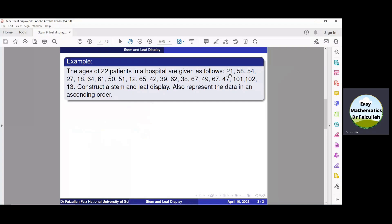According to this method, we divide each number into two parts. The first part is called stem and the remaining is called a leaf. Just like in 21, 2 is stem, 1 is leaf. In 58, 5 is stem, 8 is leaf. In 54, 5 is stem, 4 is leaf and so on.